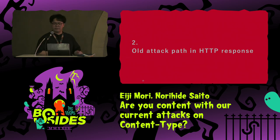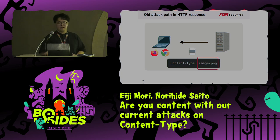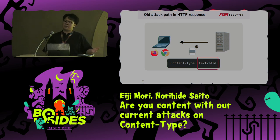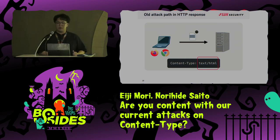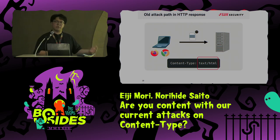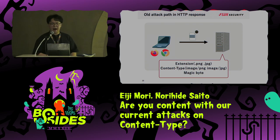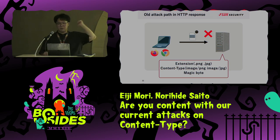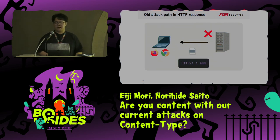As a first review, let's look at the old attack path. Until now, it has been difficult to change the HTTP response content type. This is because in order to include malicious data in the content type, the malicious content type must be included with a file that is being uploaded. Under the middleware, an application validates the file — for example, file extension, content type, and magic byte — and the application returns a validation error.